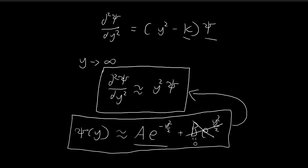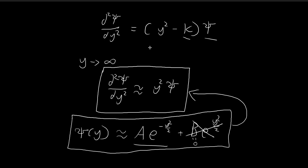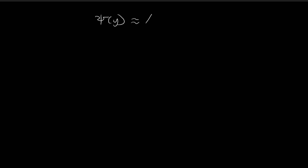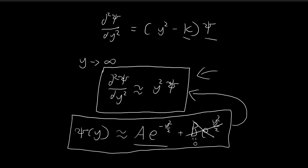So now we're going to focus on the fact that as y tends towards large numbers, our xi is going to be approximately equal to this expression over here — specifically the e to the power of negative y-squared over 2 term. And it's easy to check that this is indeed an approximate solution to this differential equation.